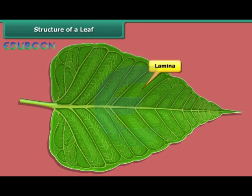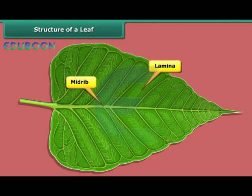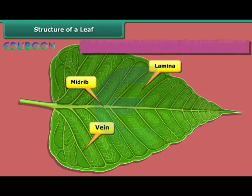The lamina is green in color. The thick line present in the middle of a leaf is called the midrib. The thin lines branching from the midrib are the veins. The arrangement of veins on a leaf is called venation.